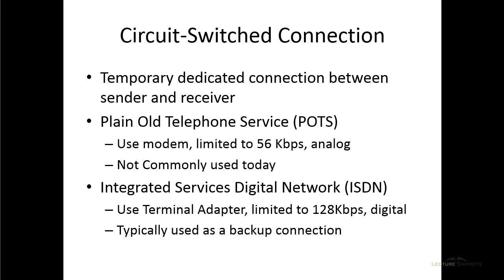There are two circuit switched options. One is plain old telephone service, also known as POTS — it's very slow, using a modem at up to 56 kilobits per second, and it's analog, not really commonly used today. Another option is the integrated services digital network, also called ISDN, which uses a terminal adapter and is limited to about 128 kilobits per second. The difference is that ISDN is digital, allowing slightly higher speeds. Companies today may use ISDN only as a backup connection in the event that everything else fails.